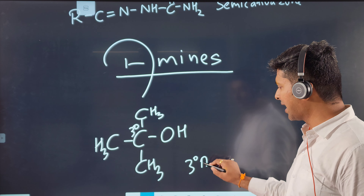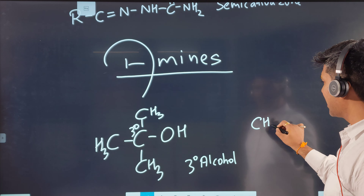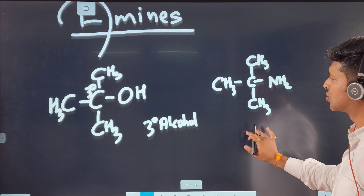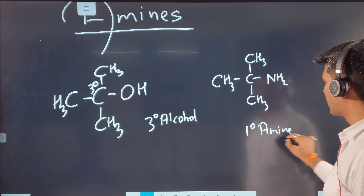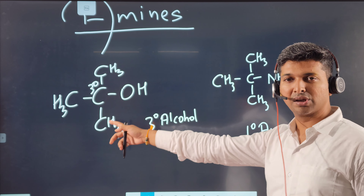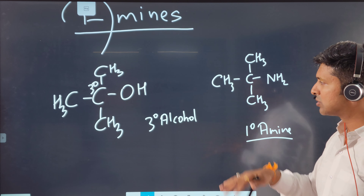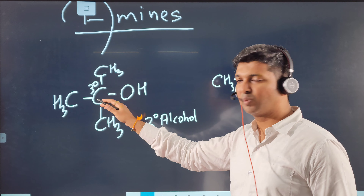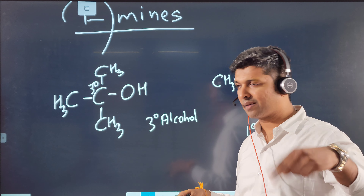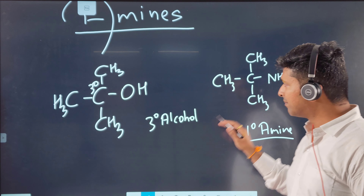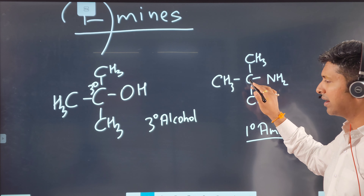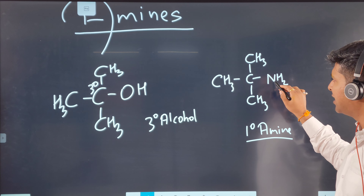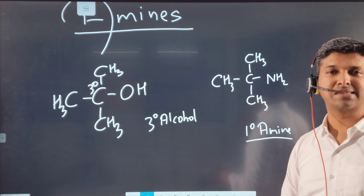If you attach an amine group to a tertiary carbon in a similar fashion, this cannot be called a tertiary amine — it is a primary amine. In alcohols, we consider which carbon the OH is attached to. But in amines, it does not matter which carbon NH₂ is attached to. What matters is: how many carbons is the nitrogen directly attached to?